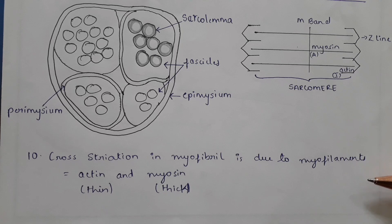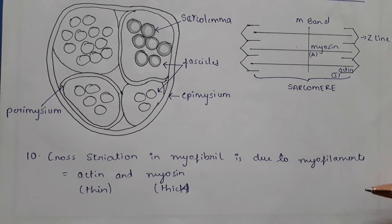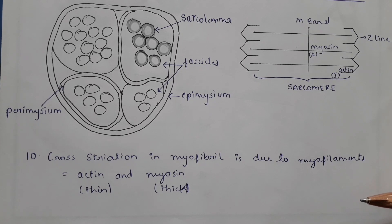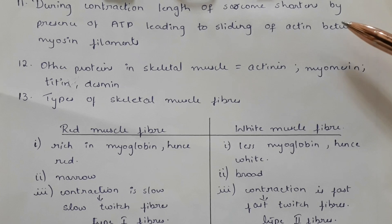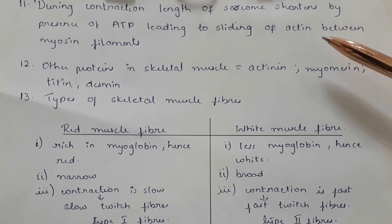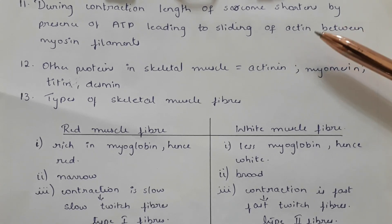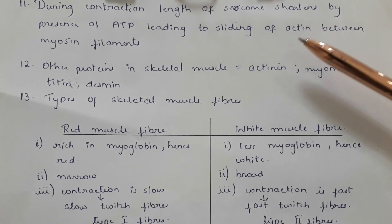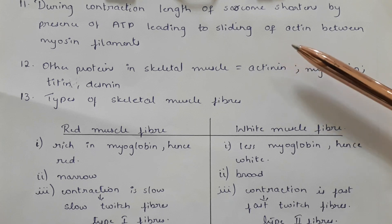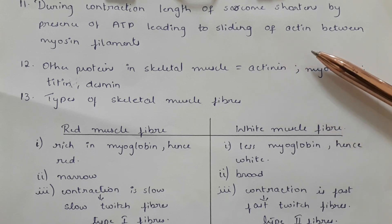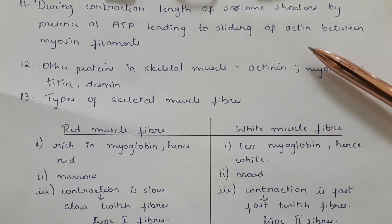Cross striation in myofibril is due to myofilaments called actin and myosin. The actin filaments are thin and the myosin filaments are thick. During contraction, the length of the sarcomere shortens by the presence of ATP, leading to sliding of actin between the myosin filaments.